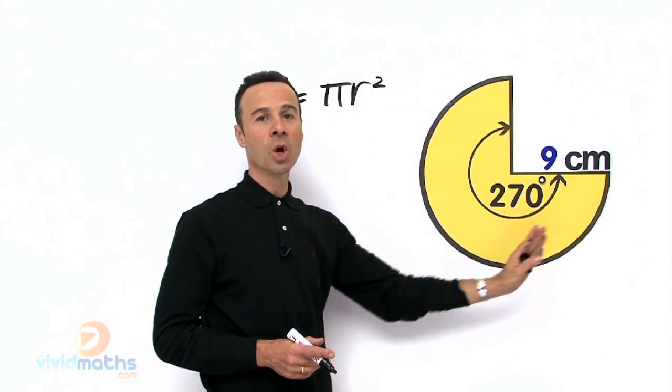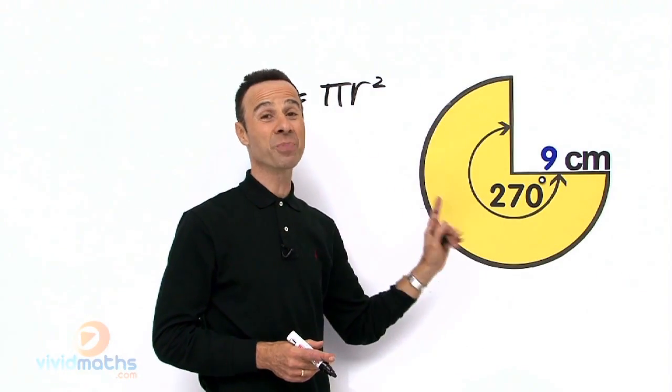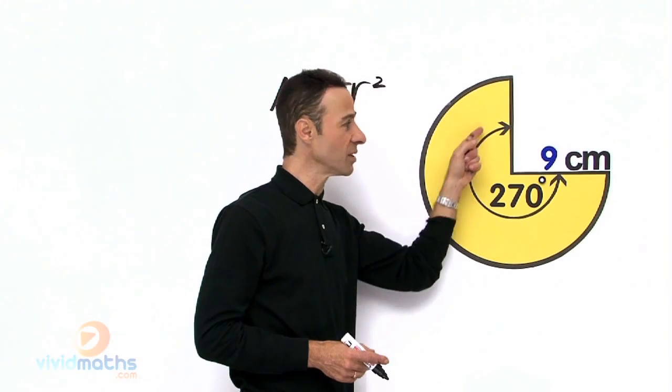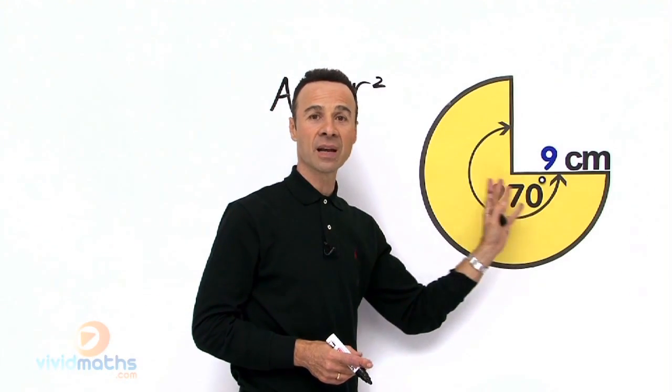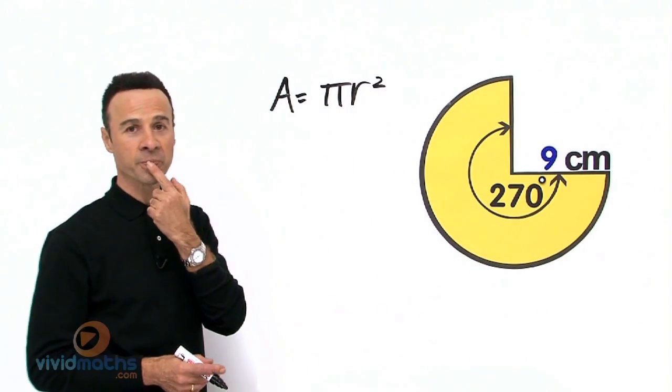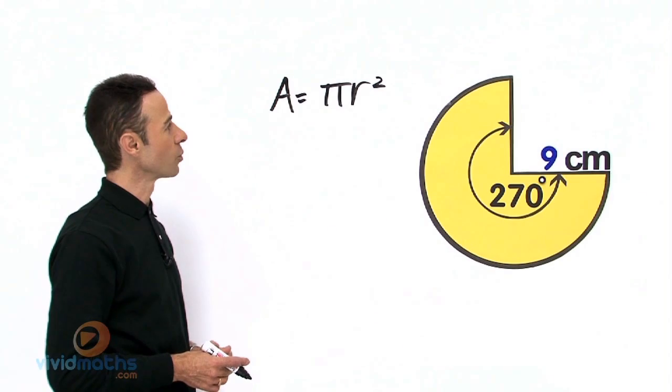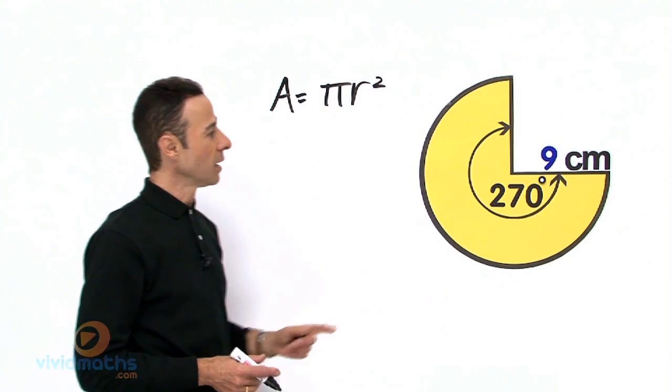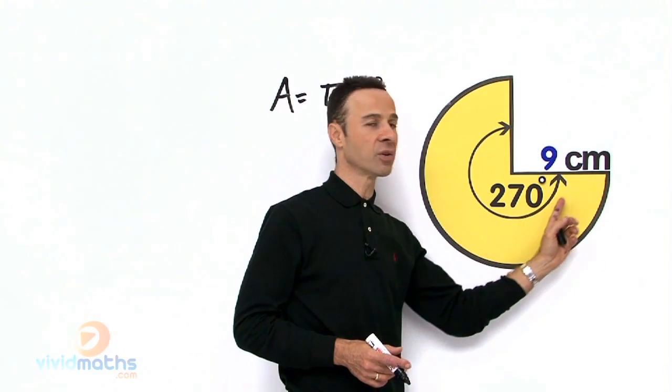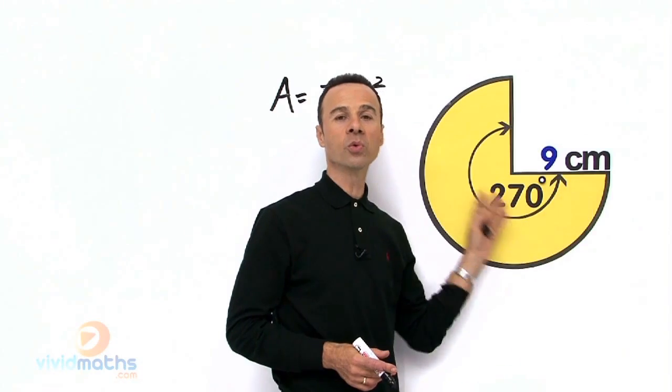Now, the good news is we have been given what that angle is, and it is 270 degrees. So that is 270 degrees. How can we work this out? Well, it is 270 degrees of what? What was the total?